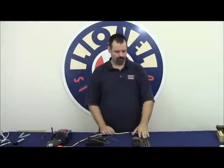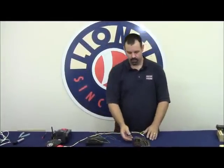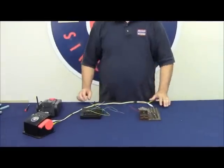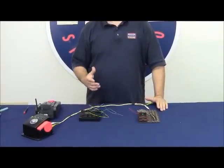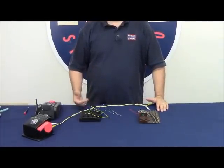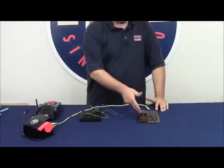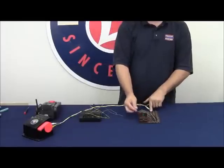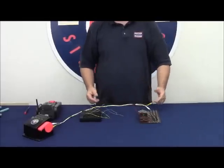We have here a typical O27 remote switch with the modification that we made in an earlier video, where we modified an O27 switch to run on a constant voltage supply. We've done that by clipping the wire that goes to both coils from the center rail, disconnecting that, and connecting that coil to this wire that's exiting the switch.